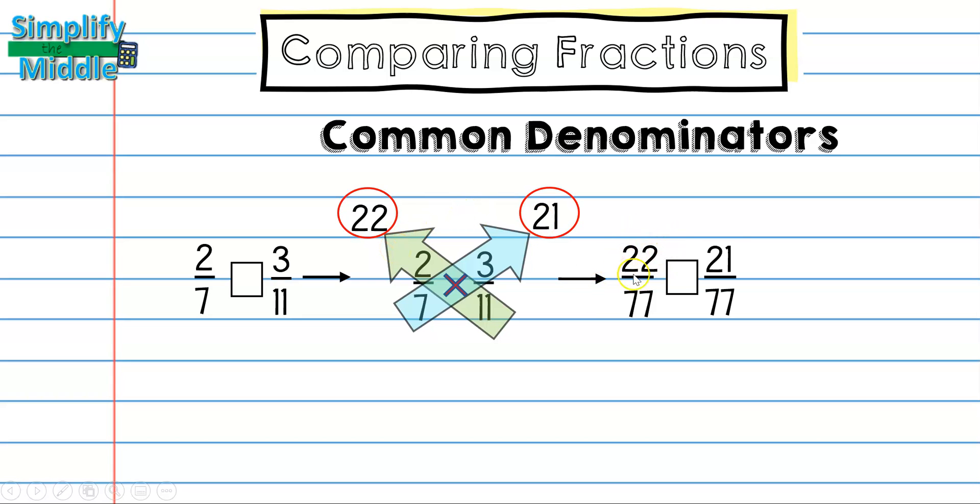So because 22 is bigger than 21, this is going to be greater. And that means that 2 sevenths is also greater than 3 elevenths, because these are the same exact fraction sets.